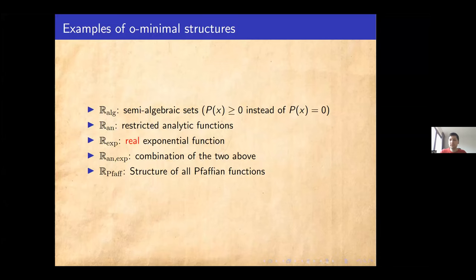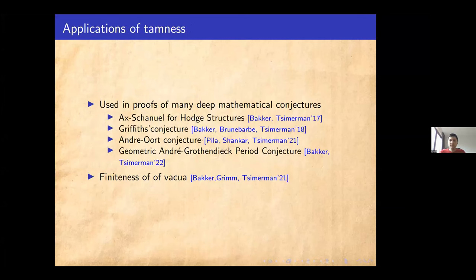Now let's assume we have some function or class of functions and we know it is tame. What does this actually give us? O-minimality has been used in many proofs of recent mathematical conjectures, like the André-Oort conjecture or the André-Grothendieck period conjectures. These conjectures give restrictions on how many relations there can be between transcendental functions, or geometrically restrict so-called unlikely intersections. In a more physical sense, it was used to prove the finiteness of vacua in F-theory, where Bakka, Grimm, and Zimmermann showed that certain self-dual classes can have only finitely many solutions, corresponding exactly to the vacuum landscape.